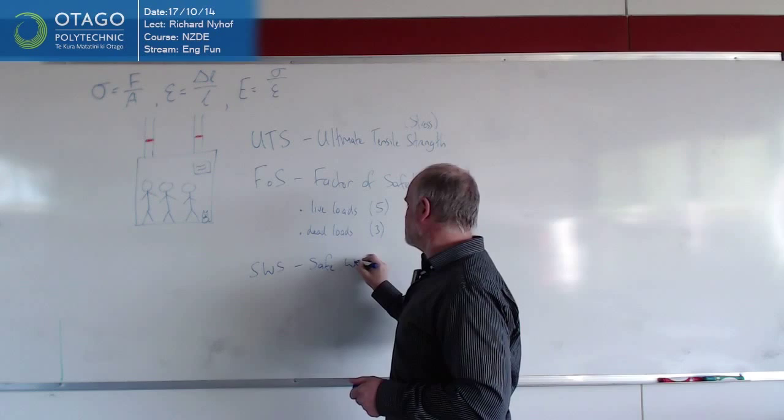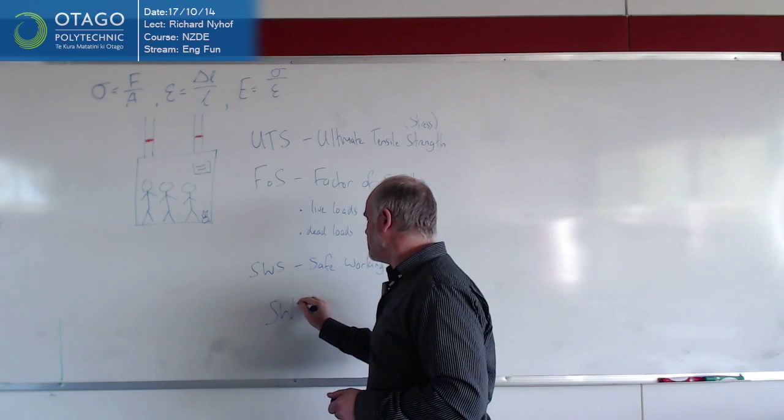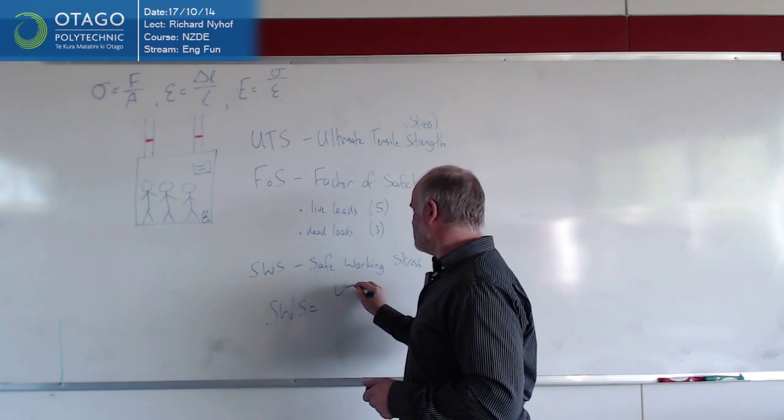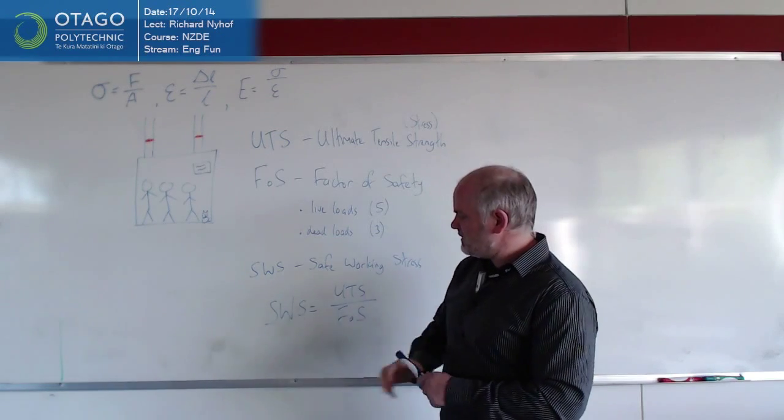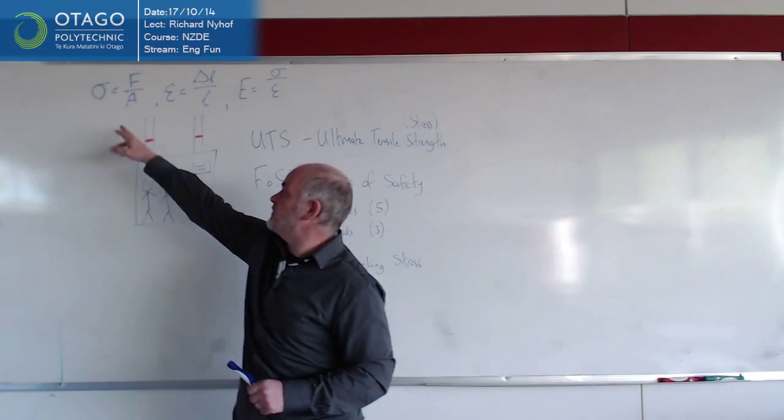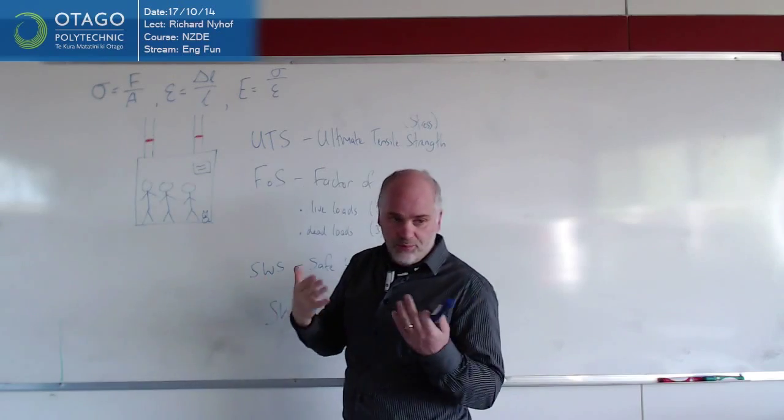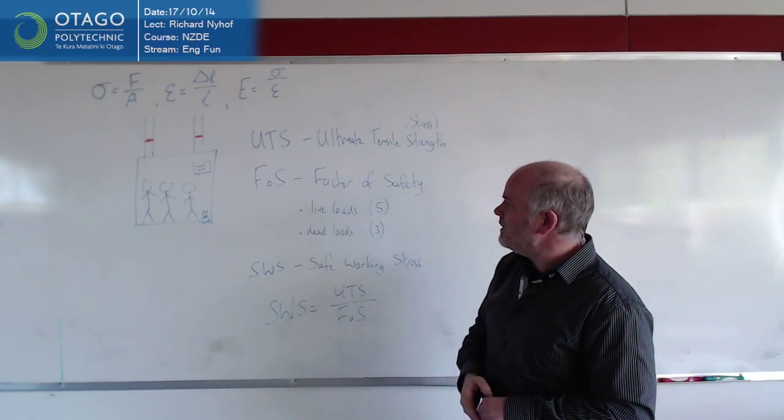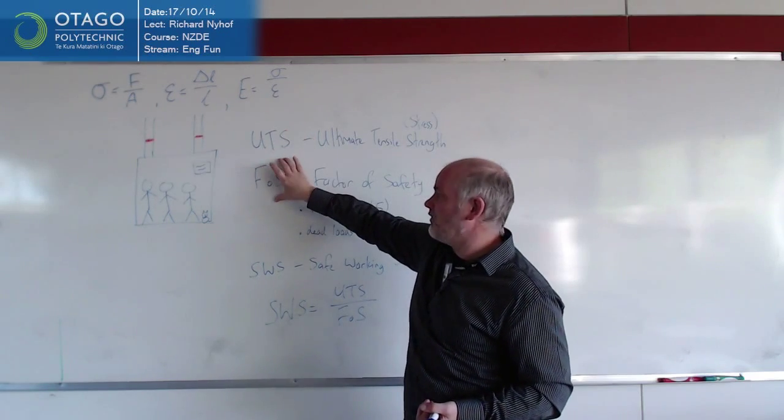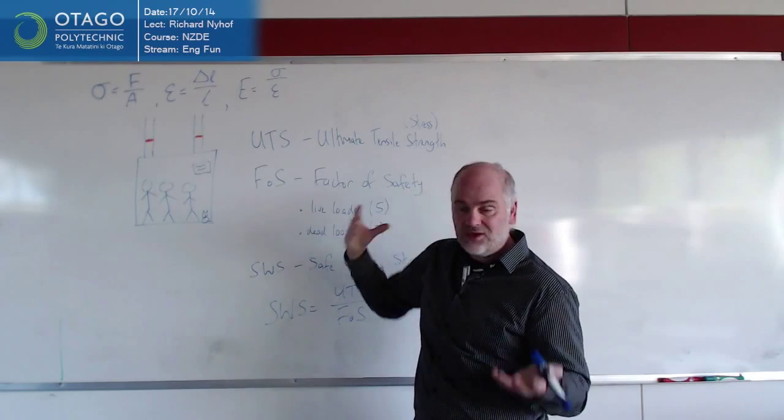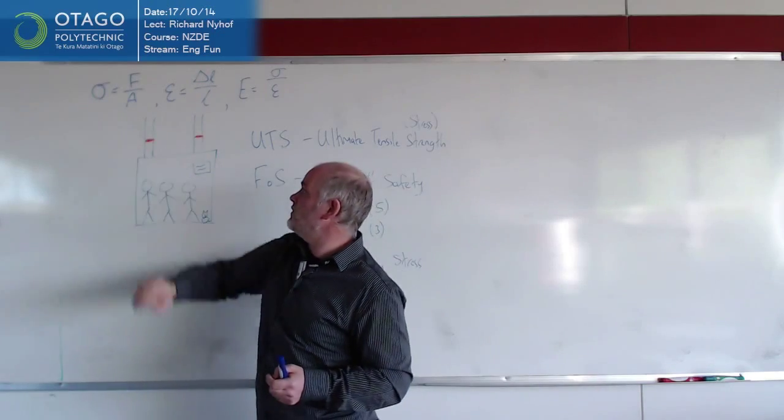The safe working stress is equal to the ultimate tensile strength divided by the factor of safety. And this safe working stress is what they pop into the stress formula to go with the load and the area of the cross-section to work out what's going to actually happen. So you know the ultimate tensile strength theoretically for a material. You divide it by a safety factor to make sure you don't get even near the breaking point, and you come up with the safe working stress, which is what you use in the formula.